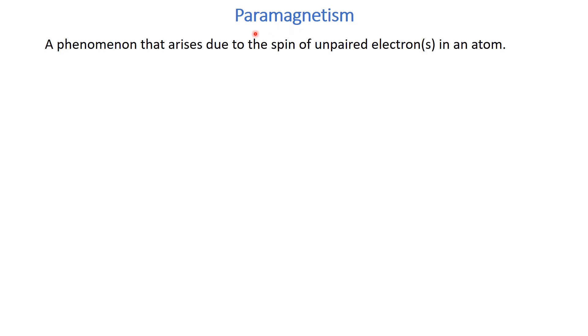Assalamu alaikum. Today we are going to discuss paramagnetism. Paramagnetism is a phenomenon that is associated with the spin of unpaired electrons in an atom.